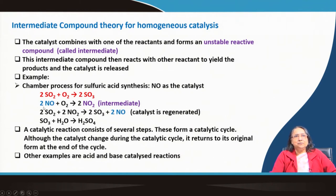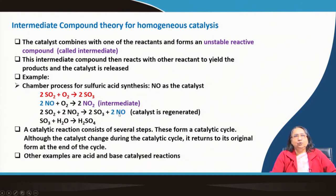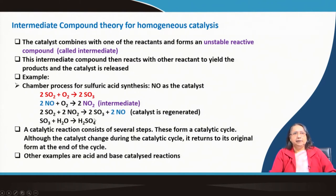For the SO₂ oxidation reaction, NO is used as the catalyst. NO first reacts with oxygen to form NO₂, which is the intermediate. Then NO₂ reacts with SO₂ to give SO₃ and regenerate 2NO — the catalyst is regenerated. Finally, SO₃ reacts with H₂O to give H₂SO₄, completing the industrial synthesis of sulfuric acid.